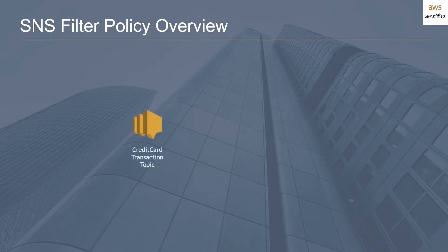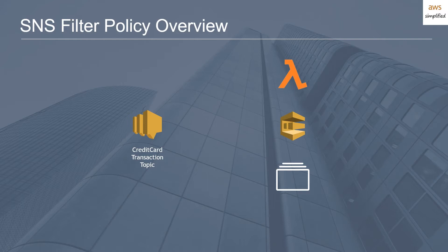Let's assume that we have a vanilla SNS topic — for this case I'm calling it the credit card transaction topic — and assume that we have three different types of subscribers. We have a Lambda function that gets invoked every time someone pushes a message to the SNS topic, an SQS queue that receives messages when messages are sent to the topic, and some arbitrary HTTP endpoint, maybe a local machine that you have hosted on your site.